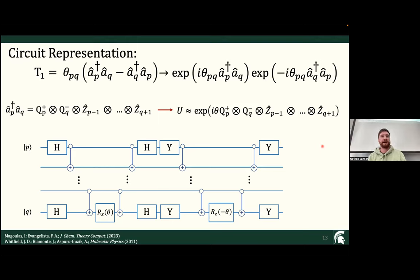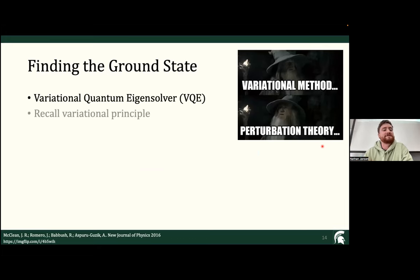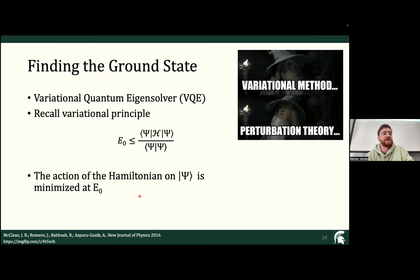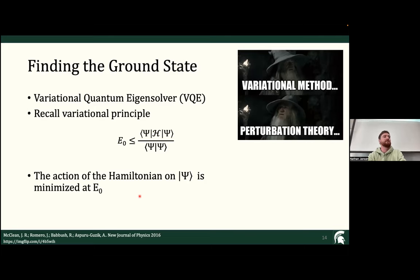We've mapped our operators, which allows us to map our wave function ansatz. Now we need to find the ground state, and for this VQE uses the variational method. The variational principle states that the expectation value of the Hamiltonian on our wave function psi is minimized at the ground state energy. The idea is you take a guess at the wave function, plug it into the formula, and if tweaking the wave function gives a lower energy, you know your new wave function is closer to the true ground state. If you minimize as much as possible, you converge toward the ground state energy.